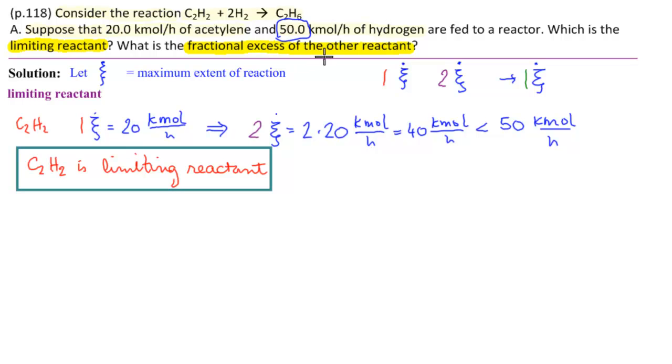What is the fractional excess of the other reactant? Well, the other reactant is hydrogen. So let's get our formula for that. How does fractional excess work? It's what's fed minus what's consumed over what's consumed, and we're looking at hydrogen.